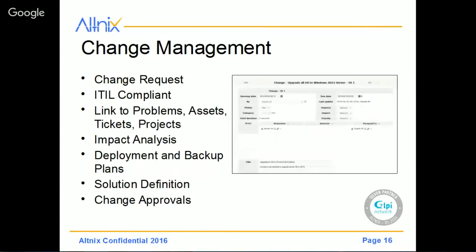We also have a Change Management module. This is where you can initiate a new change request. You can link a particular change request to problems, assets, tickets, and other projects. You can do an impact analysis of what will happen if you make this change. Based on that, you can come up with a deployment and a backup plan, and define a solution on how this change is going to be implemented. Change processes often require approvals by different people — something called a change approval board or change control board. You can define changes and have approvers who approve or reject the change, which is a way to define approvals for different changes within the ITSM module inside GLPI.